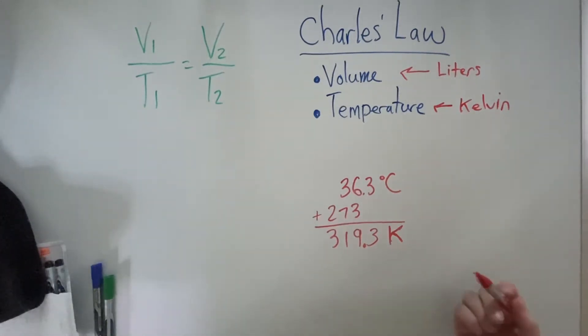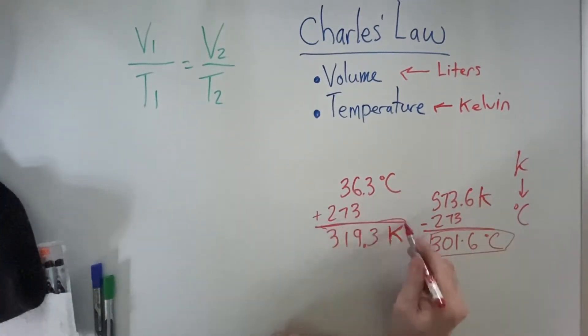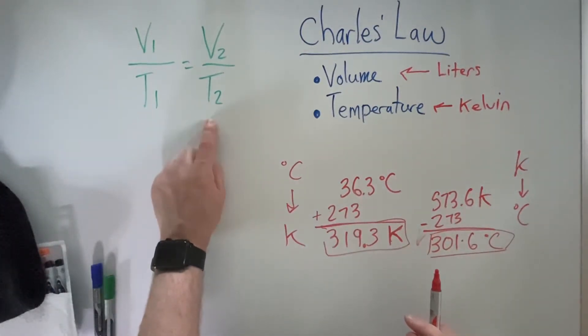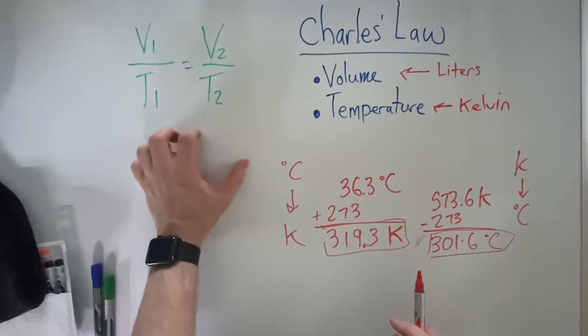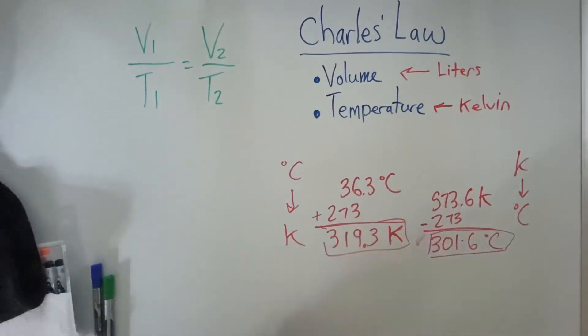Now, there may be problems where you have to get the answer in Celsius. So if you get 573.6 Kelvin, and I want it in Celsius, you're going to subtract 273. So this is 300.6 degrees Celsius. So this is what it looks like when we go from Kelvin to Celsius. And this is what it looks like when we go from degrees Celsius to Kelvin. You cannot put a degree Celsius into the equation. It's not going to give you the right answer. This relationship was determined by determining the relationship between liters and Kelvin.